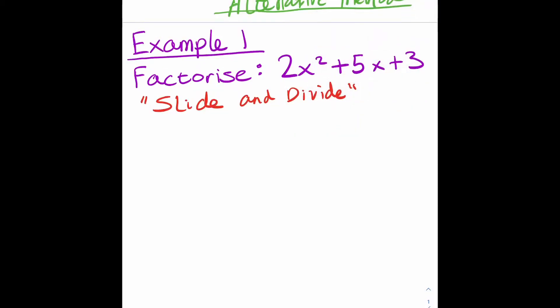Okay, this is a quick method called the slide and divide method. If you have a look at the slide above, the first step is to times the first number by the last number. So in this case it would be 2 times 3.